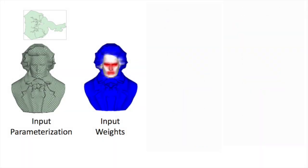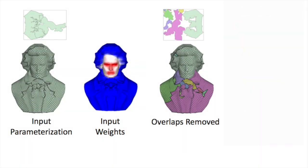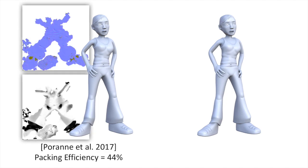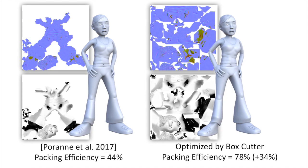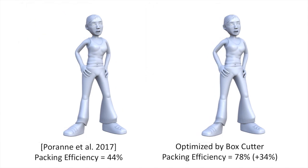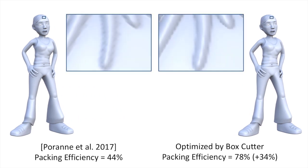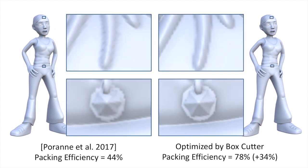Our algorithm supports the use of weights to discourage cuts through visually important regions. In this example, normals and occlusion were baked into the atlas from a high-resolution reference model. Our framework enhances the visual quality of the results, since the available texture resolution is optimally exploited.